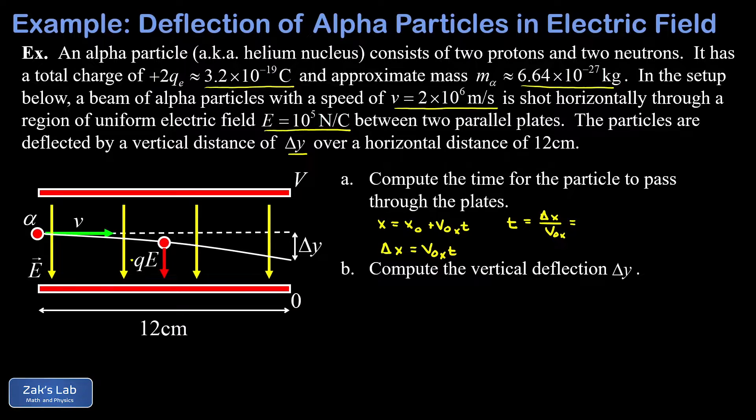And that X velocity of the particles, which is the same as the initial X velocity of the particles because it never changes, that's 2 times 10 to the 6 meters per second that was given to us.